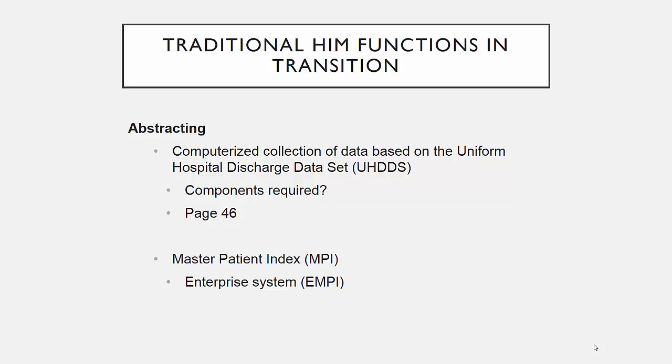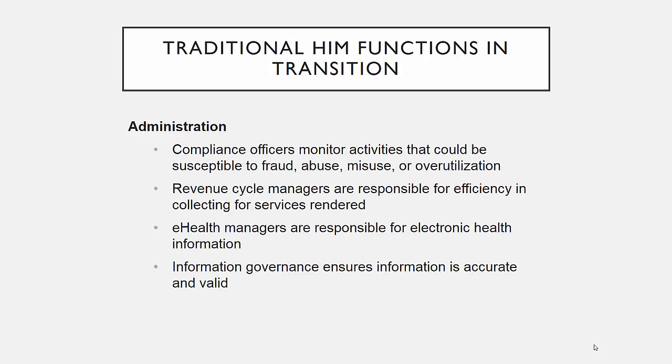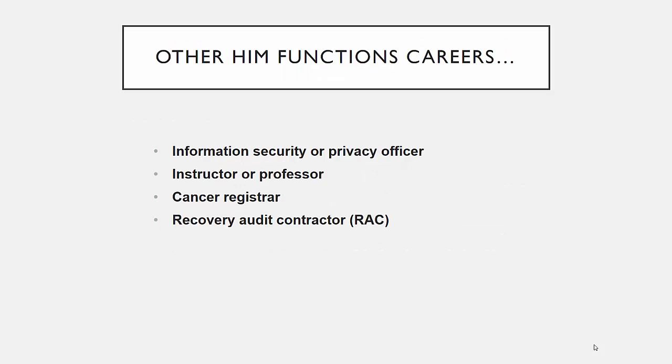We're going to learn more about the MPI and the EMPI later as well. Because the role of HIM has evolved and changed so much over the years, there is a greater need for administrators to manage the information. In HIM, it's necessary to have compliance officers to make sure all regulations are met to avoid fraud and abuse claims that may severely impact the financial health of the organization. CMS can revoke participation if an organization is found to submit fraudulent claims, therefore eliminating vital reimbursement. Revenue cycle managers make sure that all money owed is collected in a timely and effective manner, while e-health managers make sure the data is collected in the most efficient and valuable manner.